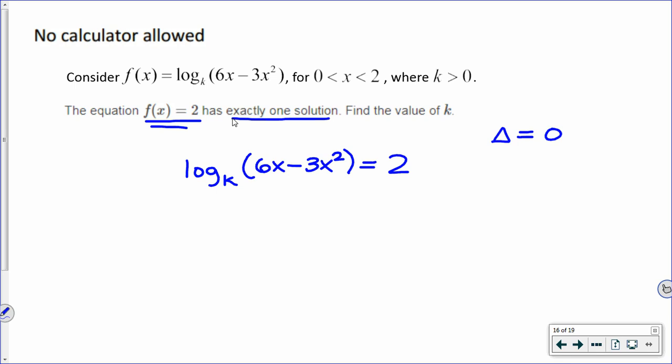So the base of this log is a k. Base k. And the log equals an exponent. So this thing is the exponent in the log equation. So I put that on the base. So base k to the exponent of two would equal the argument of your log. So that's just rearranging a log equation to an exponential equation.